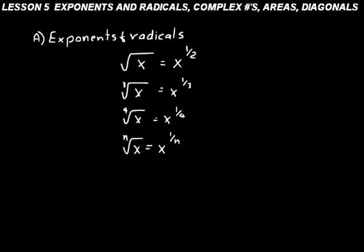Let's remember another algebra definition. If we had x to the one-half power times x to the one-half power, remember what you do: if you have similar bases multiplied together, you add the exponents. So x to the one-half times x to the one-half is the same thing as x to the power of one, or just x. Likewise, the square root of x times the square root of x equals x, because the square root sign just means x to the one-half power.